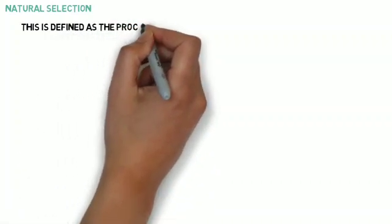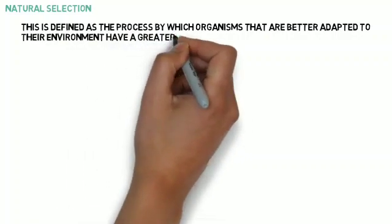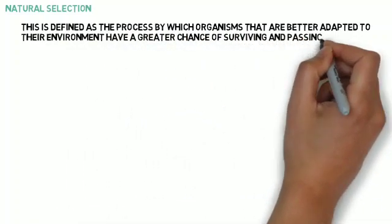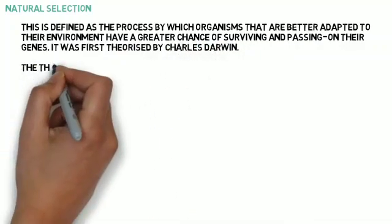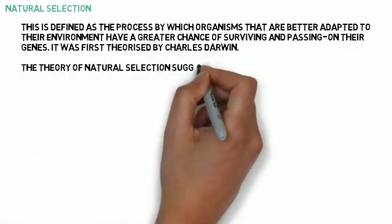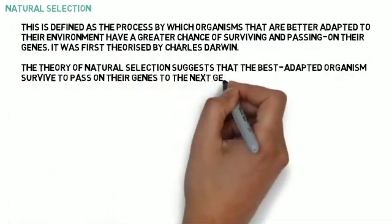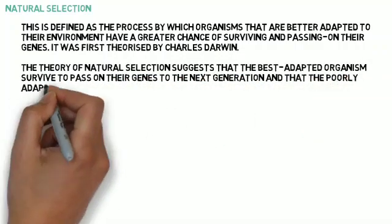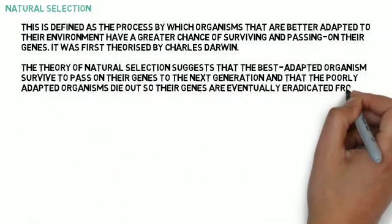Natural Selection. This is defined as the process by which organisms that are better adapted to their environment have a greater chance of surviving and passing on their genes. It was first theorized by Charles Darwin. The theory of natural selection suggests that the best adapted organisms survive to pass on their genes to the next generation, and that the poorly adapted organisms die out, so their genes are eventually eradicated from the population.